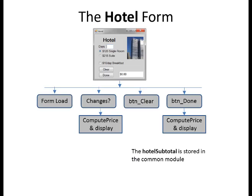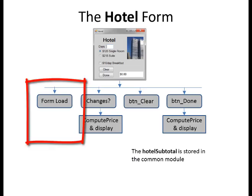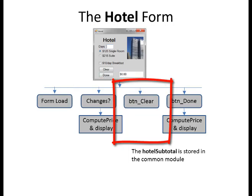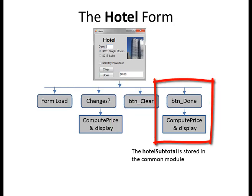The code for the hotel form is pretty similar. On form load, clear everything. If there are any changes to the days, the room selection, or the breakfast selection, recompute the price and display it at the bottom. Button clear clears everything. Button done recomputes, displays it, and returns to the main program.